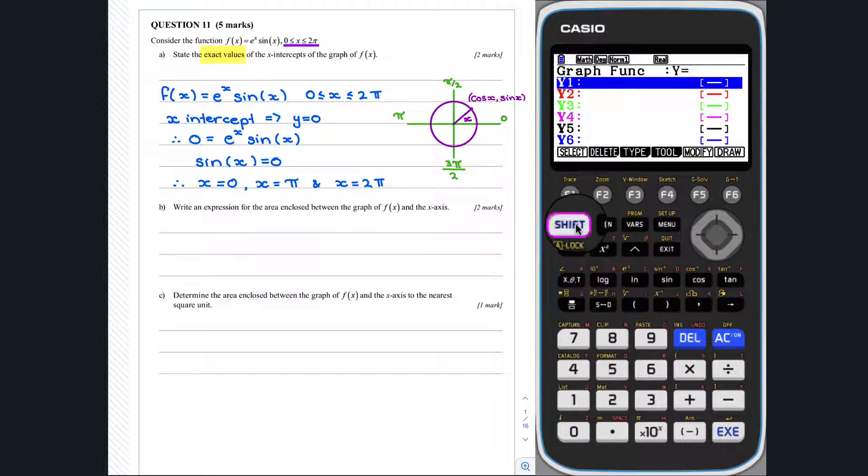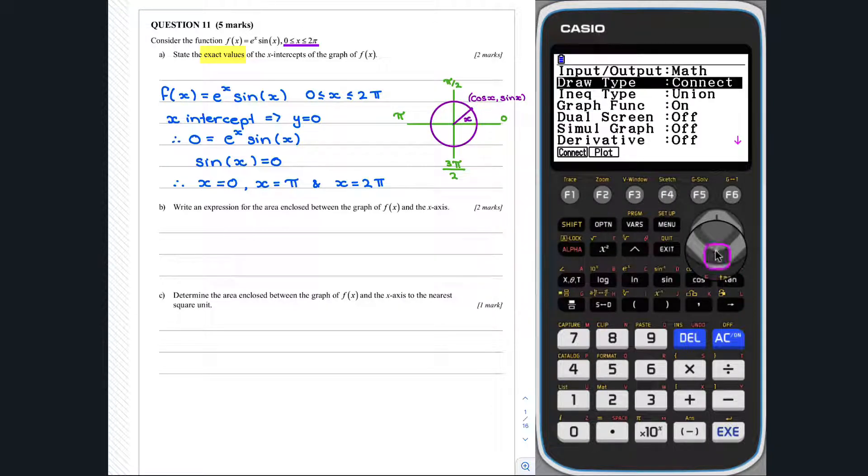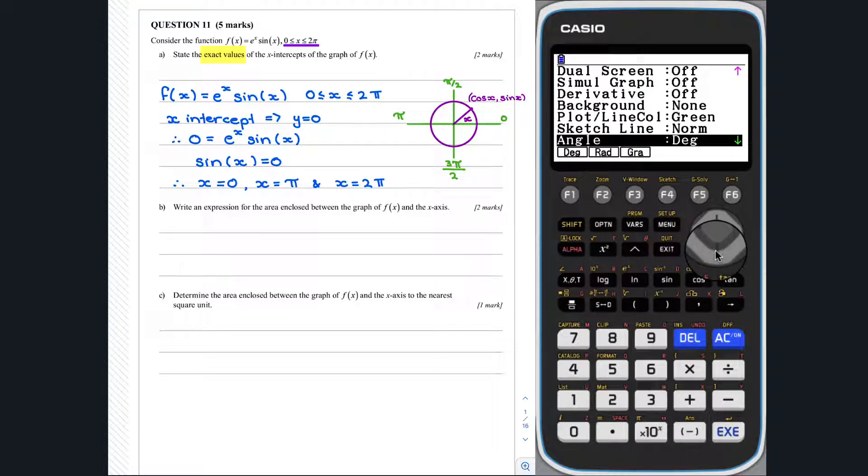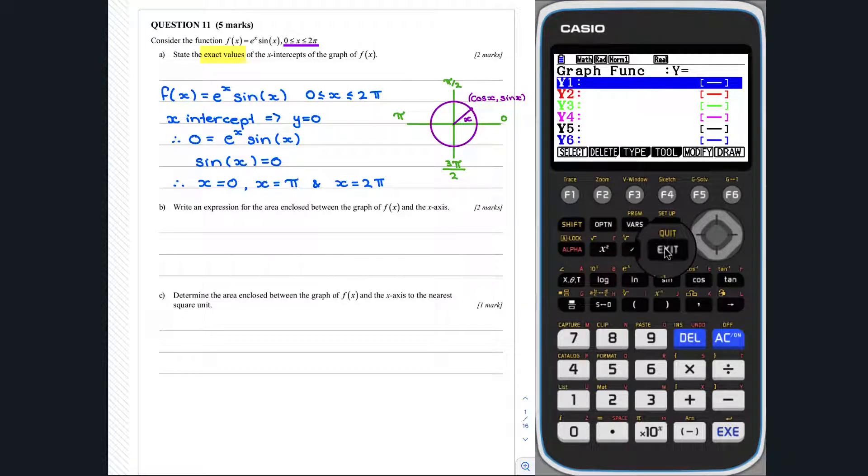We go shift, set up, and we scroll down until we find angle, and we want it to be in radians. We can now enter f of x into y1 as follows.